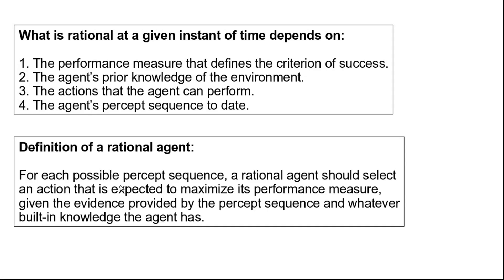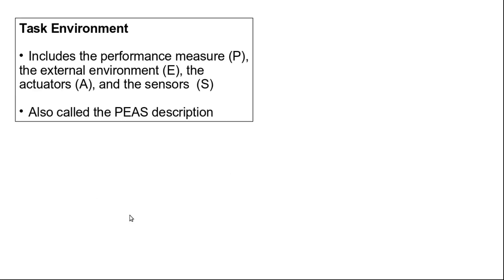This definition incorporates all four things mentioned above. The rational agent should select an action that is expected to maximize its performance measure, given the evidence provided by the percept sequence and whatever built-in knowledge the agent has. With that, we go to the task environment. The task environment includes the performance measure, the external environment, the actuators, and the sensors. These four combine to specify a task environment, also called the PEAS description, where P stands for performance measure, E stands for environment, A stands for actuator, and S stands for sensors.